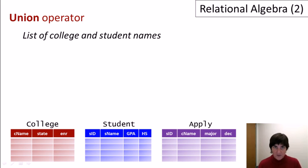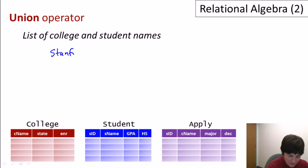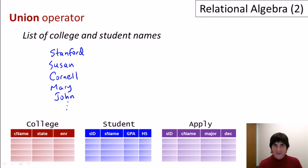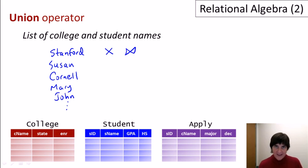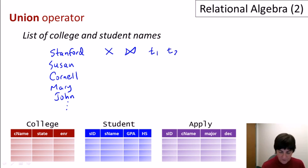The first of three set operators is the union operator — a standard set union. Suppose we want a list of the college and student names in our database, for example Stanford, Susan, Cornell, Mary, John, and so on. You might think we can generate this list using operators we've already learned, such as cross-product or natural join. The problem is those operators combine information horizontally. We want to combine information vertically to create our list, and to do that we use the union operator.